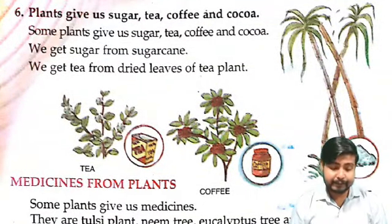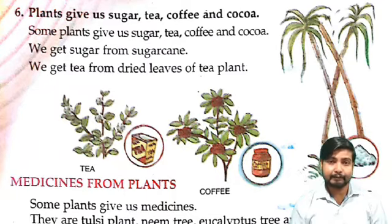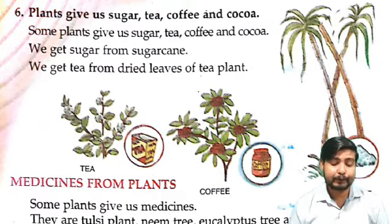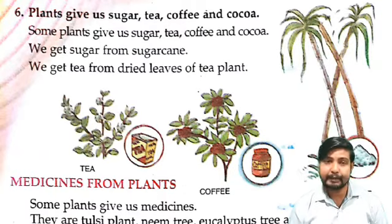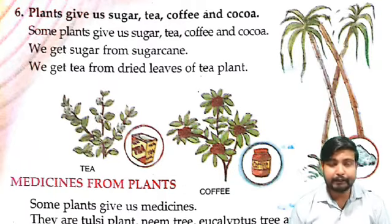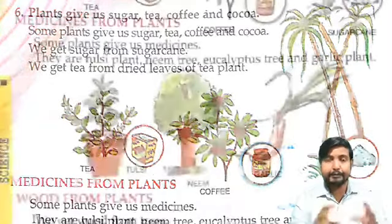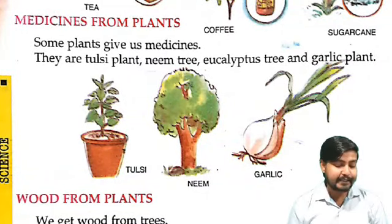Then plants give us sugar, tea, coffee, cocoa. Aur bhi kai sare plants hai jo ki hamein sugar dete hain, tea, coffee, cocoa — jo hum peete hain, yeh sab bhi plants se aata hai. Some plants give us sugar, tea, coffee, cocoa. We get sugar from sugarcane. Then we get tea from the dried leaves of the tea plant. Uss leaf se hum tea banaate hain ya paate hain.